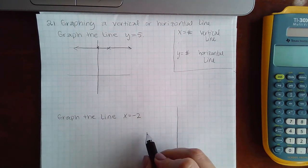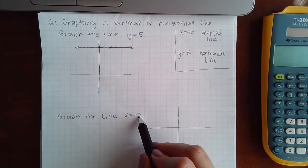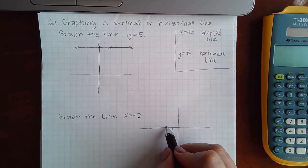First you plot that x value. So this is x equals negative two, so that's here at negative two.